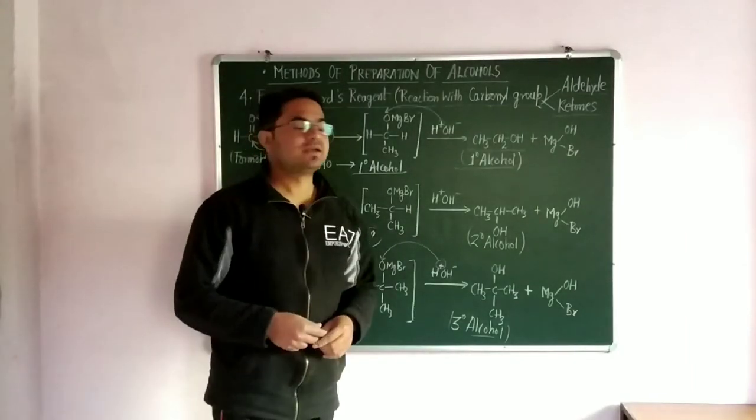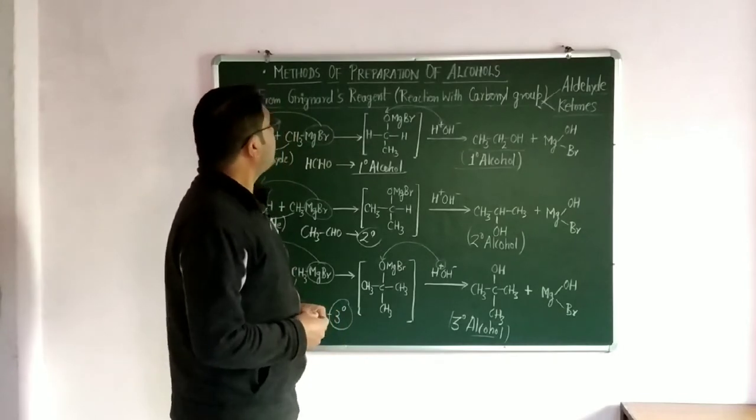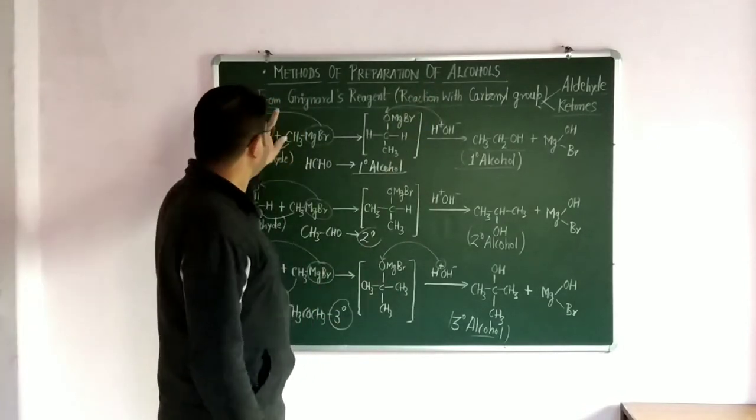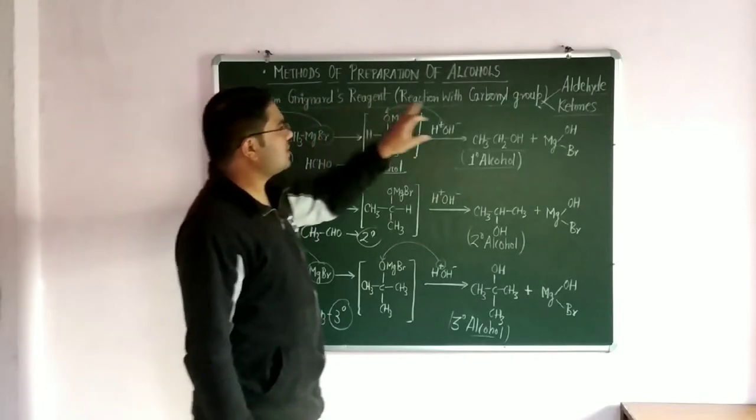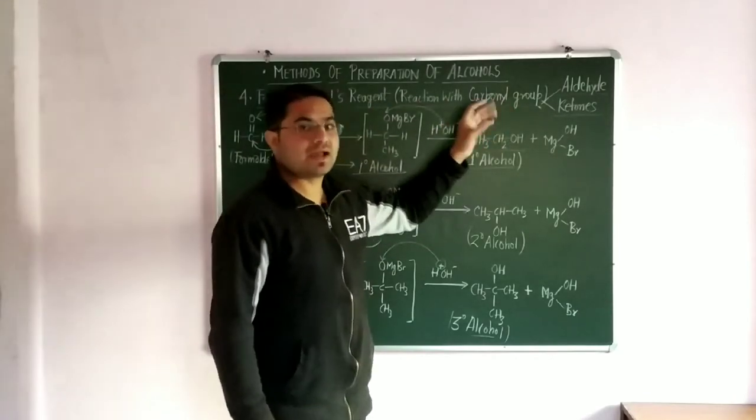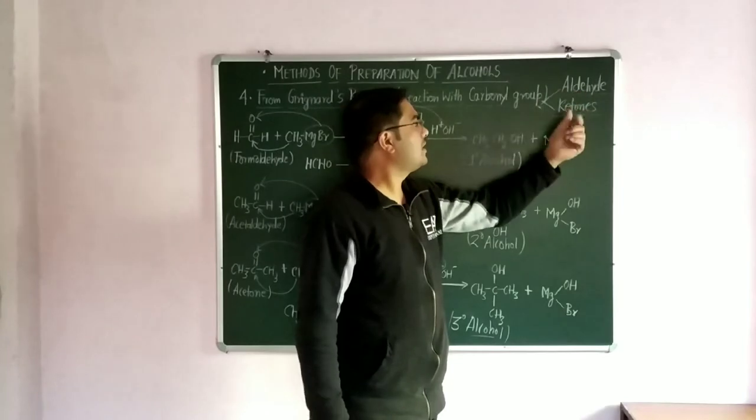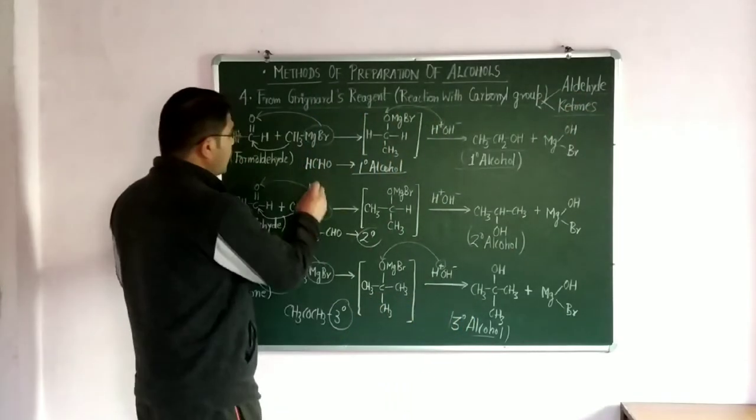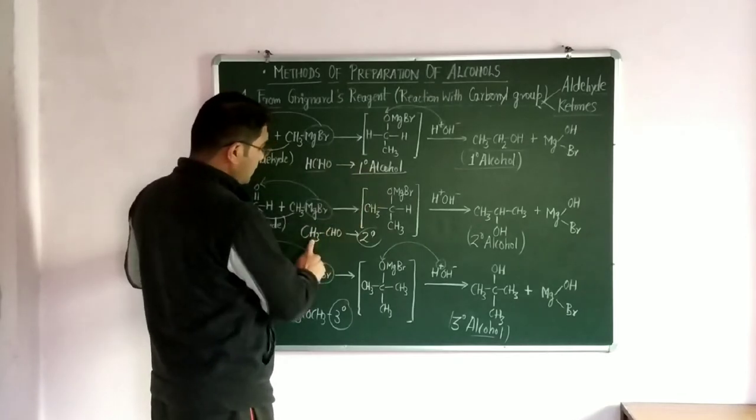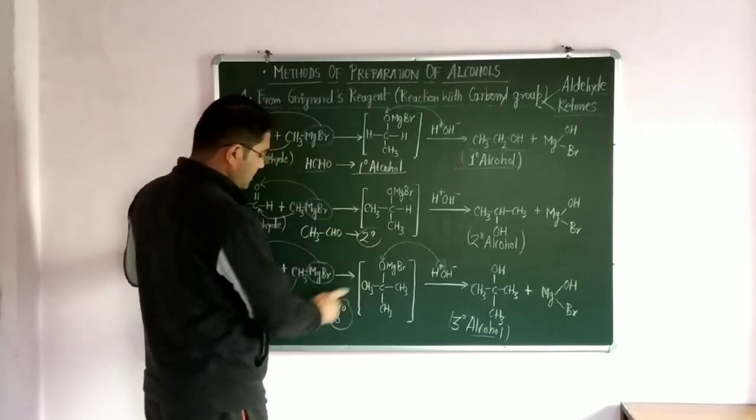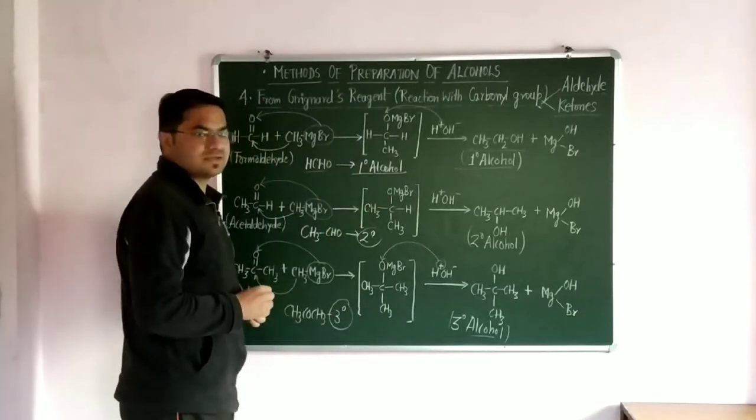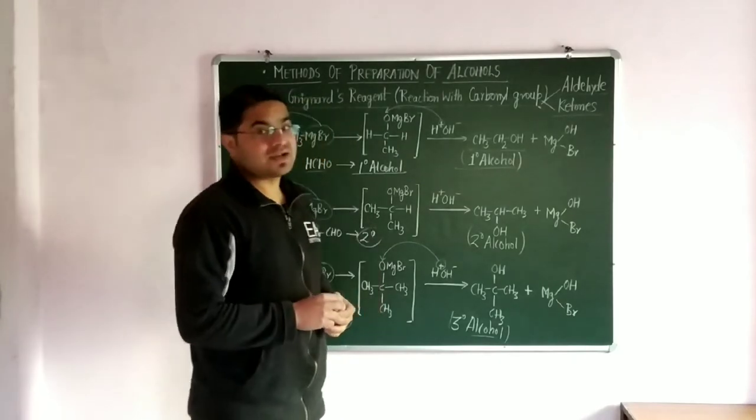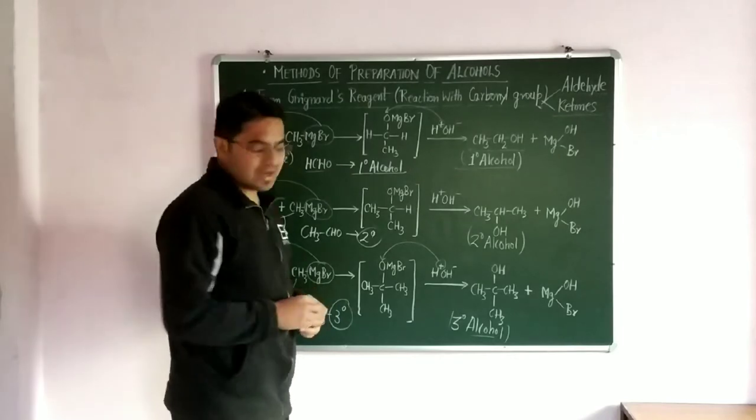Hello students, in my previous video I discussed the method of preparation of alcohols from Grignard reagent using carbonyl groups. In carbonyl groups we use aldehydes and ketones. The starting member HCHO gives primary alcohol, CH3CHO gives secondary, and CH3COCH3 gives tertiary alcohol. In a similar way, esters are also giving the same reaction with Grignard reagent.